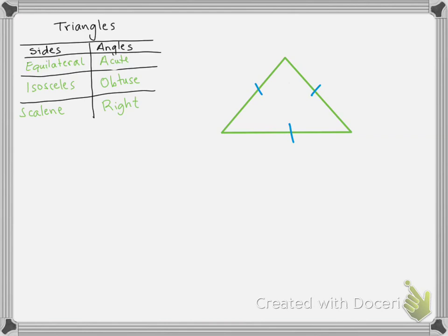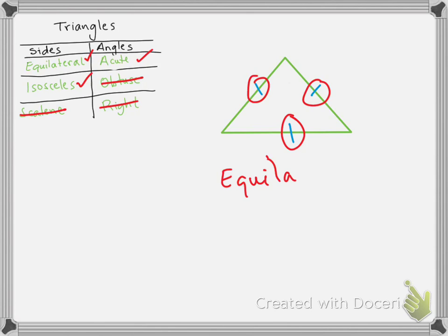Let's try the next one. Here we have congruent, congruent, congruent — all three of them are congruent. Does it have three equal sides? Yes. Does it have at least two equal sides? Yes. Does it have no equal sides? No. Does it have three acute angles? Yes. Does it have one obtuse angle? No. Does it have one right angle? No. So the name of this triangle is equilateral, isosceles, acute. This is the only triangle that has three names, actually. So memorize it.